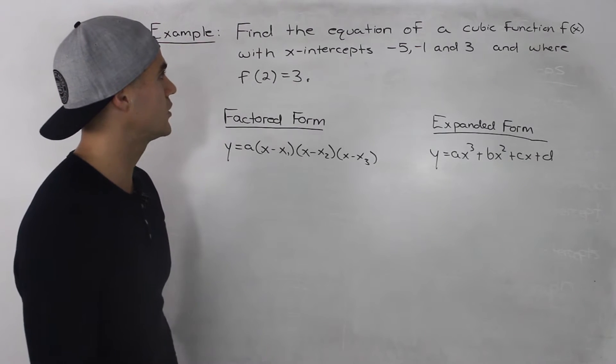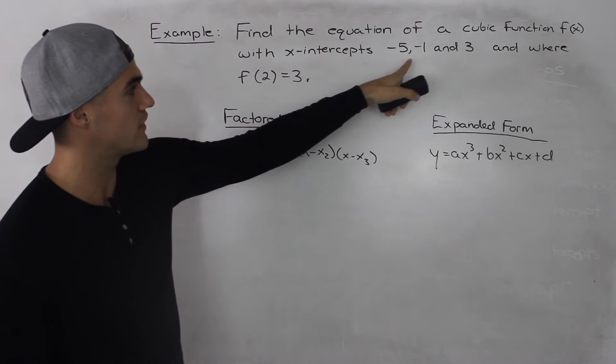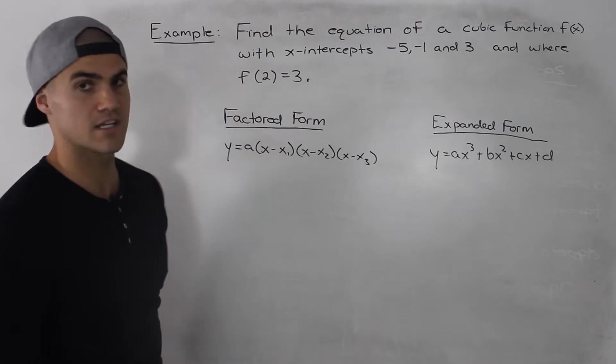Moving on to the next example, find the equation of a cubic function f(x) with x-intercepts -5, -1, and 3, and where f(2) = 3.